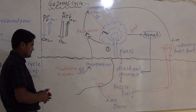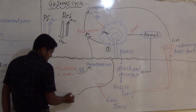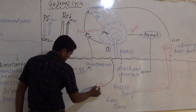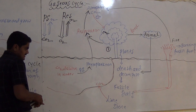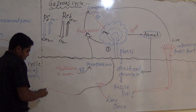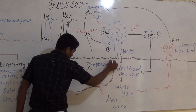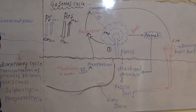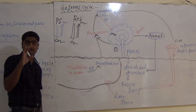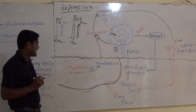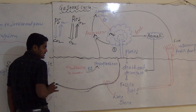The second step involves the water reservoir — the ocean. The ocean represents the complete water reservoir. In the ocean, the highest percentage of carbon dioxide is dissolved.